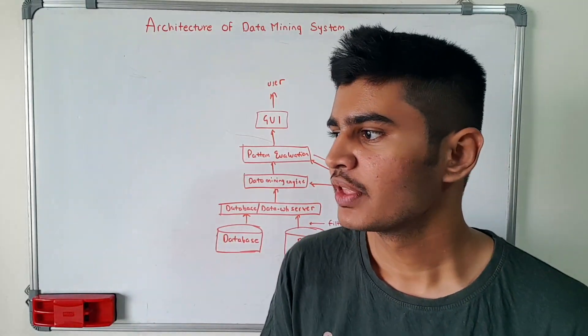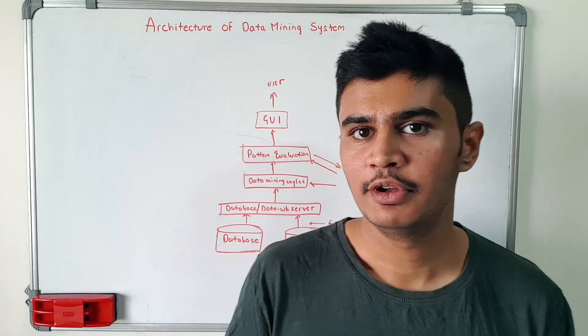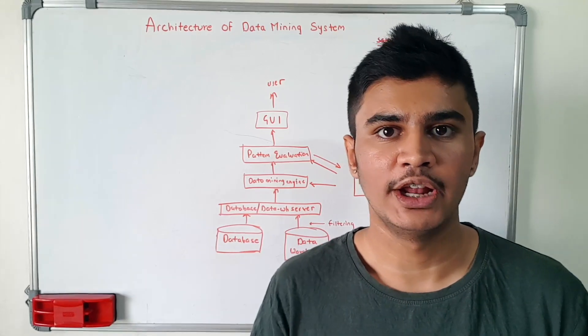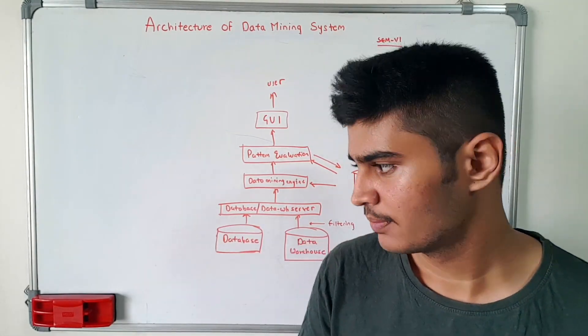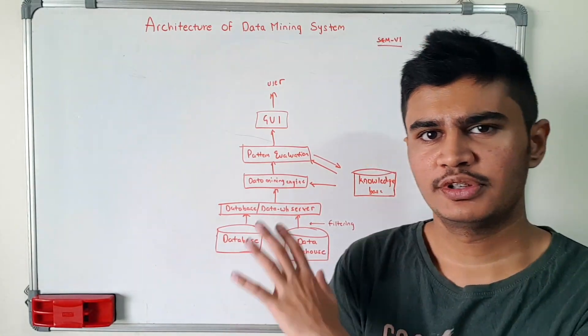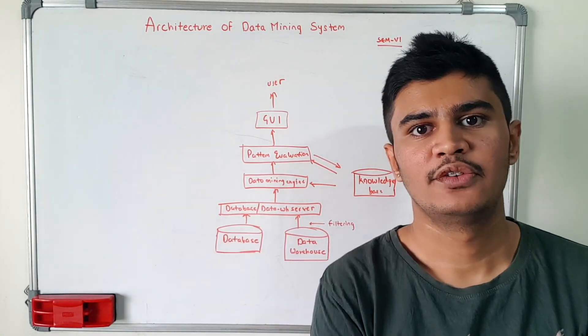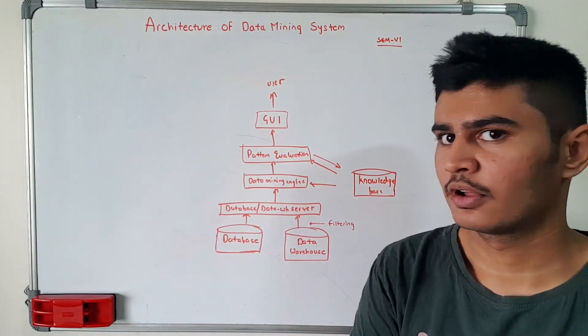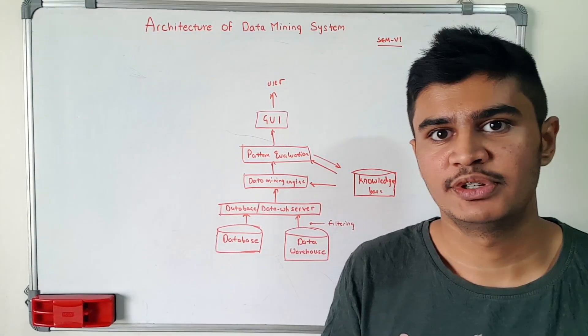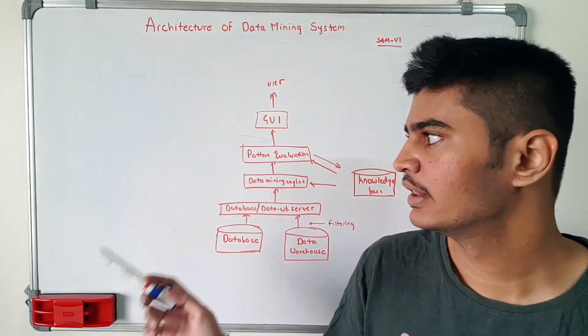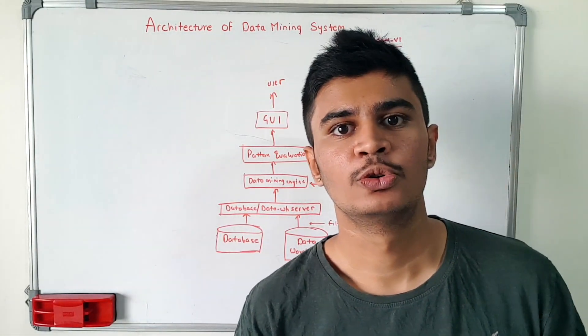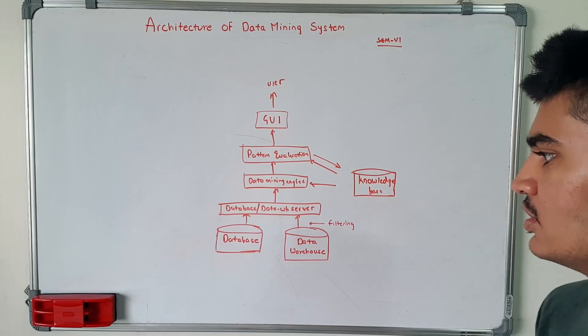in order to understand this you first have to have the knowledge of the KDD process and how it takes place. In this video we are going to understand the architecture of a basic data mining system. This is a general architecture and if it is asked in an exam then you have to draw this. This video is particularly about the Semester 6 subject which is Data Warehouse and Mining. In that there is a subtopic, architecture of data mining system, so today we are going to look into it.